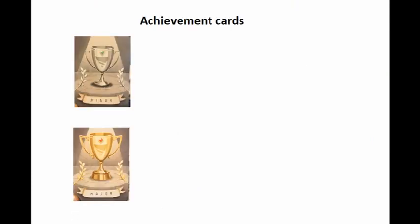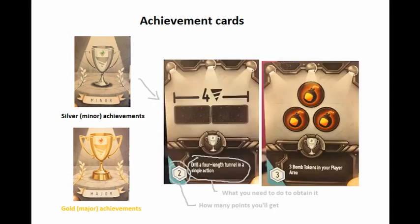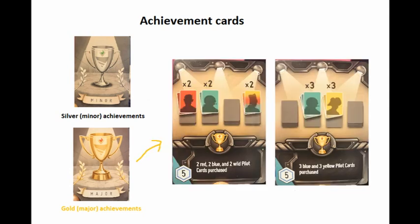And to make things even more interesting, they also have these achievement cards that you're competing for. There's the silver and gold achievements. Silver ones are the small things that you could do during your turn and get extra points for, while the gold ones reward you for going through specific skill trees. The gold achievements is the same exact concept as the nobles in Splendor.